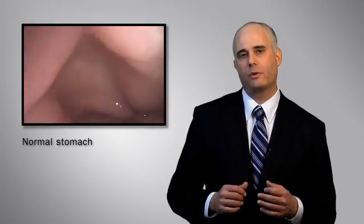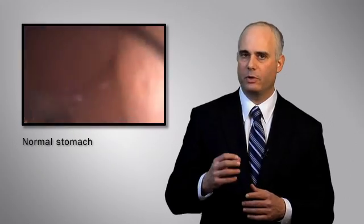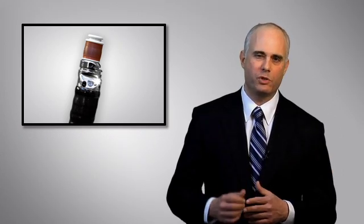The EUS scope also has an ultrasound transducer built into the tip of it. This allows us to do ultrasound deep inside the body. Because what we want to take pictures of we're so close to, we can take very detailed images.